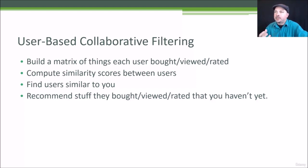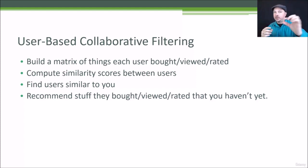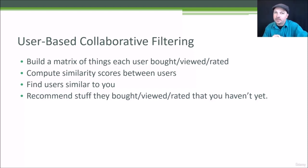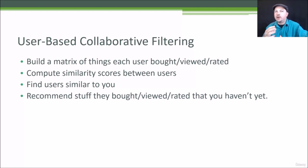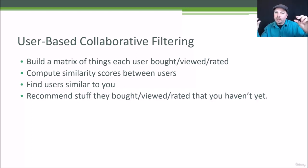The idea is we build up a matrix of everything every user has ever bought, viewed, rated, or whatever signal of interest you want to base the system on. You end up with a row for every user, and that row contains all the things they did that might indicate interest in a given product. Picture a table: users are rows and each column is an item — a movie, a product, a web page. Then I use that matrix to compute the similarity between different users by treating each row as a vector and computing similarity based on behavior.